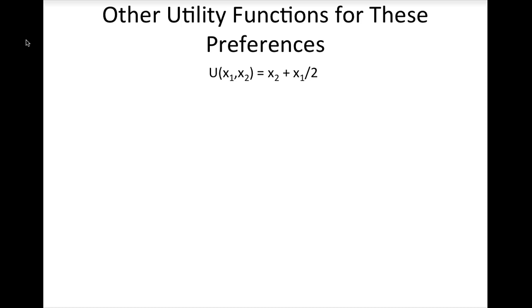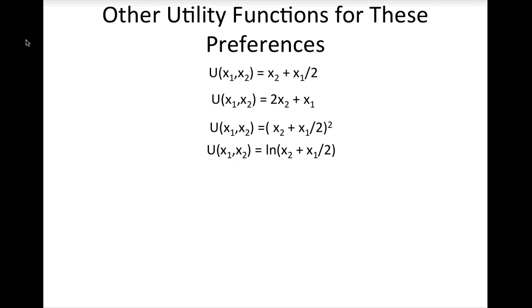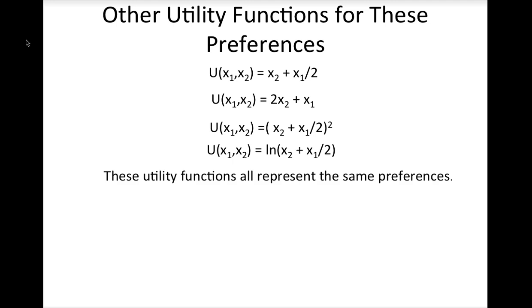Note that there are numerous other utility functions that represent these preferences. For example, if we multiply this utility function by 2, this function also represents these preferences because it generates the same rank ordering of bundles. The same would be true if we multiply by 5, 10, 100, or any other positive constant. In addition, if we square the utility function, that also represents the same preferences. A transformation such as taking the natural log of the function also represents the same preferences.